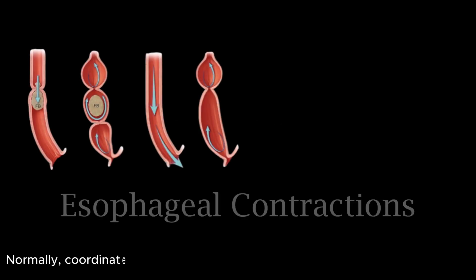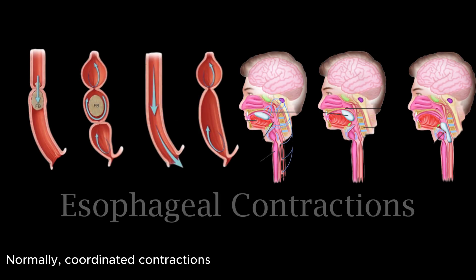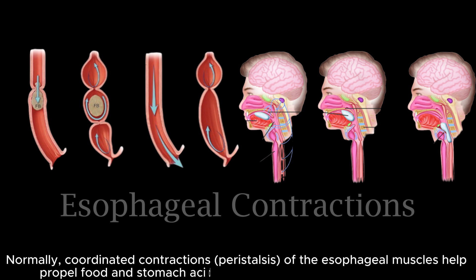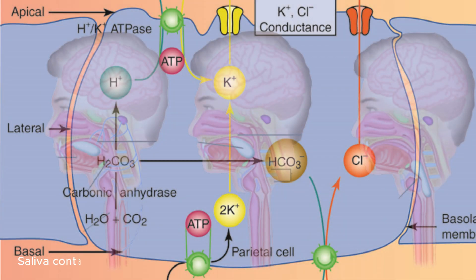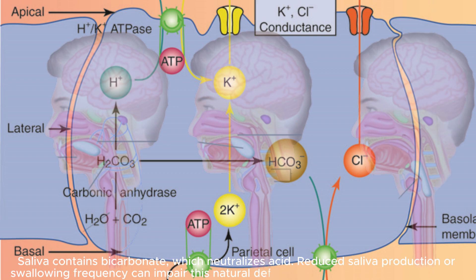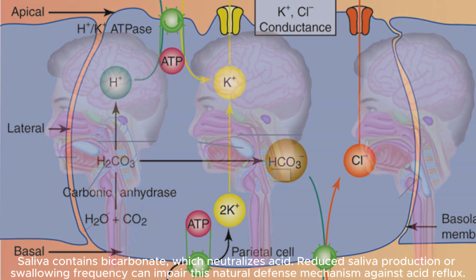Normal coordinated contractions — peristalsis — of the esophageal muscles help propel food and stomach acid downward, away from the esophagus. Saliva contains bicarbonate, which neutralizes acid. Reduced saliva production or swallowing frequency can impair this natural defense mechanism against acid reflux.